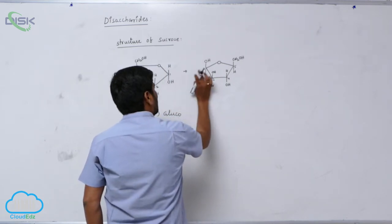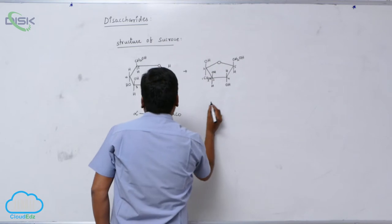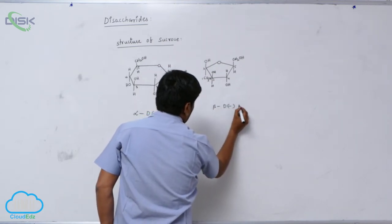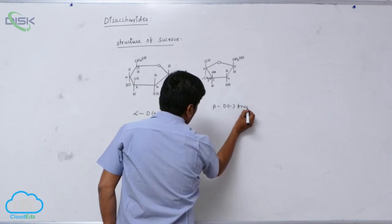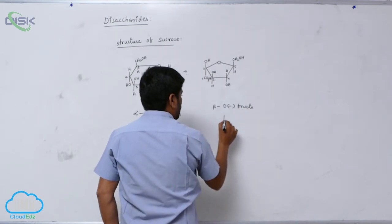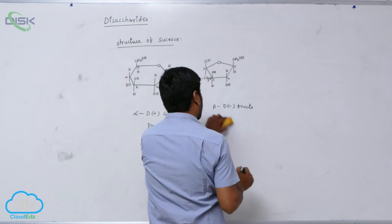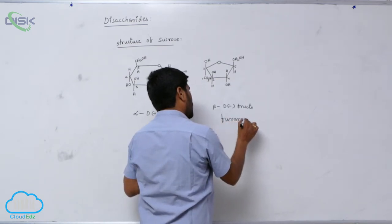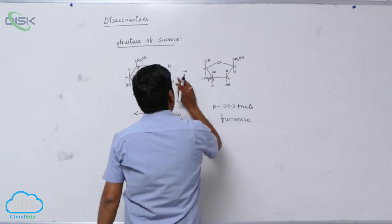Now, this is C1 carbon. This is known as beta D minus fructo furanose, furanose.